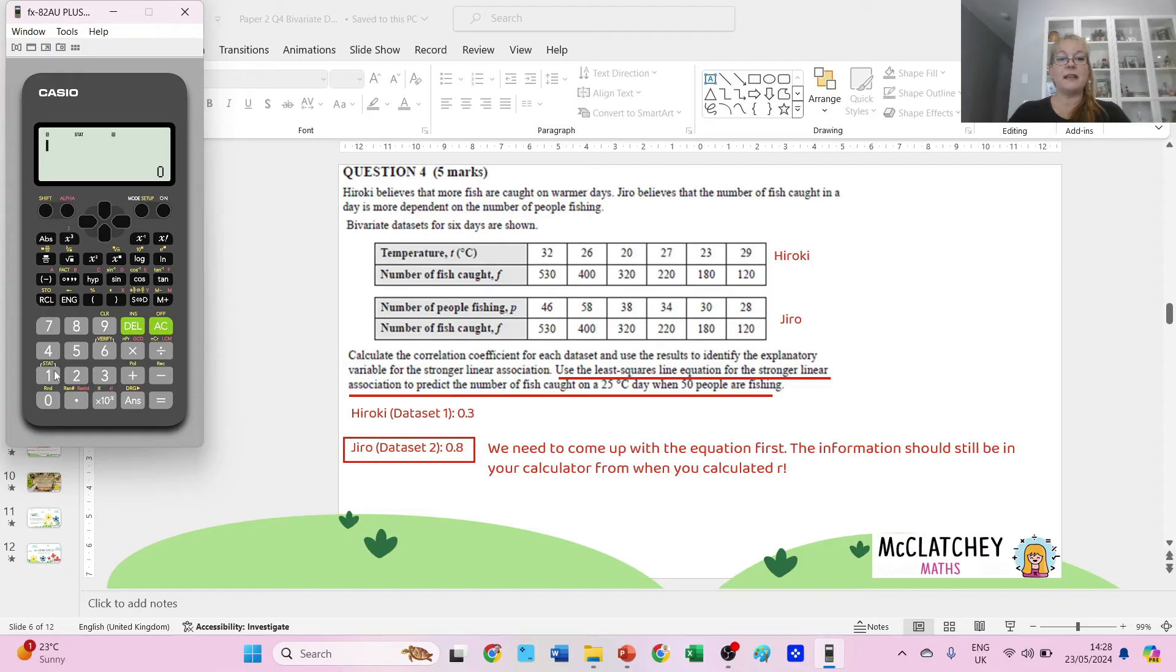Then go back to the same place again, number five, B, number two, press equals. And I get 10.8934 for my B value. We're going to write those down now.